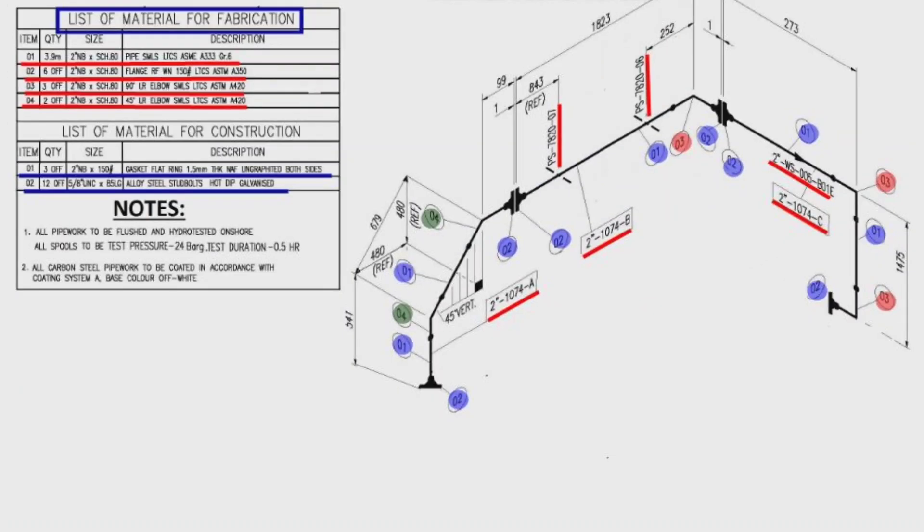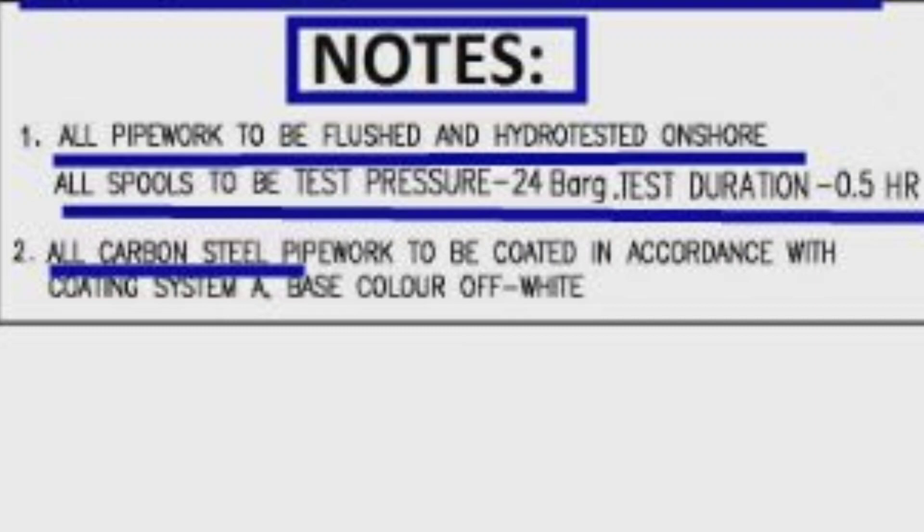Now let's look at the notes on the drawing. The first note indicates that this pipe spools to be flushed and hydrotested onshore. All spools to be test pressure is 29.4 bar, and the duration of the hydrotest will be 30 minutes. In the second note it is written that all carbon steel pipe work to be coated in accordance with coding system A, base color off-white.